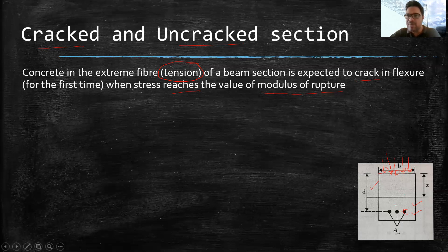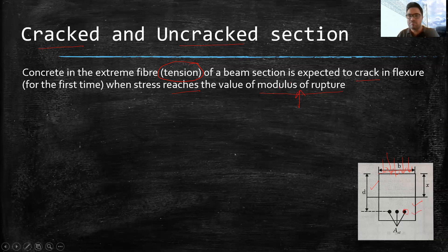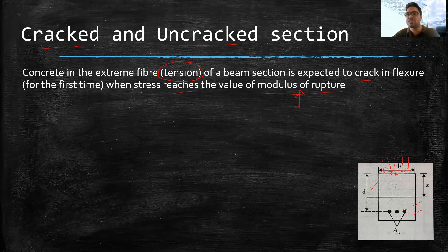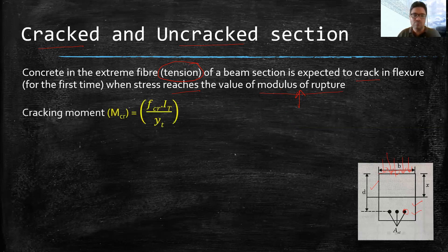The bending strength of concrete is sometimes expressed by the term modulus of rupture. This modulus of rupture is actually the measure of bending strength of the beam. And bending strength of the beam is expressed as cracking moment — the moment at which the first crack will occur is known as cracking moment, expressed by this formula.